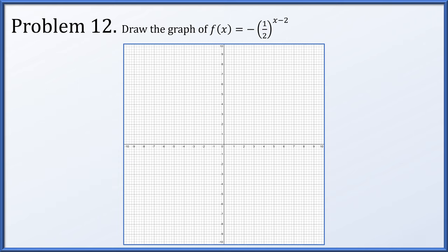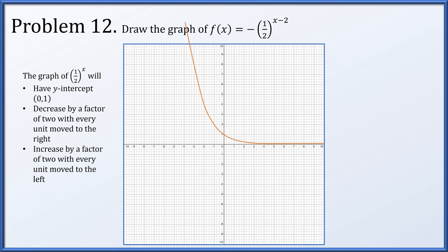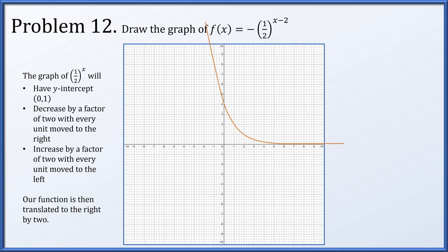Problem 12: draw the graph of f(x) = negative (1/2) to the (x minus 2). Begin with 1/2 to the x, which has intercept (0, 1). Because the base is less than 1, the graph decreases as we move right by a factor of 2 each unit, and increases by a factor of 2 moving left. It never touches the x-axis. The function we need is this graph translated right by 2 — since x is replaced with x minus 2 — and then reflected across the x-axis by multiplying by negative 1.